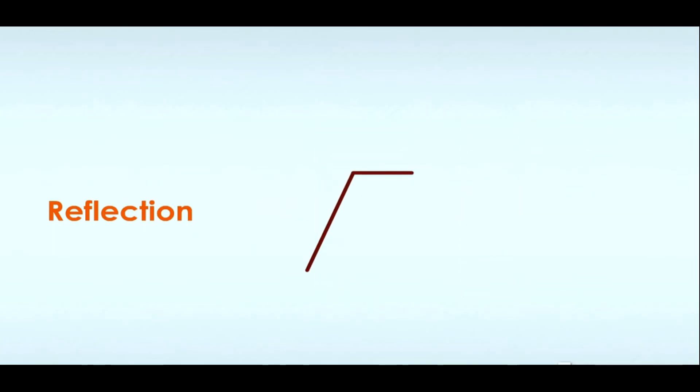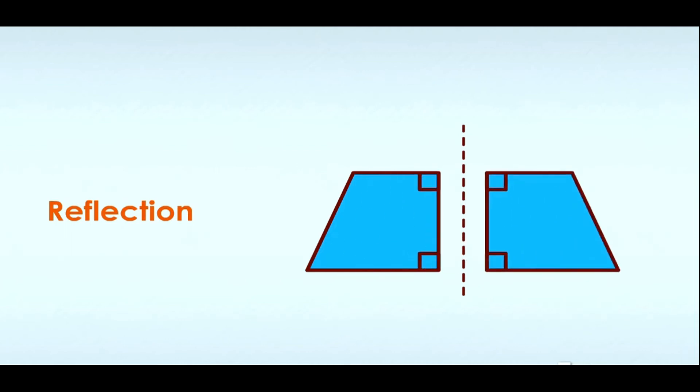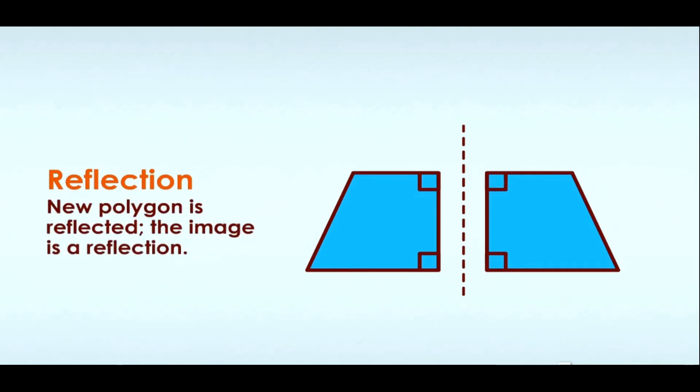Now look at this irregular trapezoid with two interior angles forming right angles. It is called a right trapezoid because of those two right angles. If we imagine a vertical line to the right of the shape, we can flip or reflect the shape across that line. Now the short side of the newly placed trapezoid is facing the corresponding short side of the original. The new trapezoid is reflected. The image is a reflection.